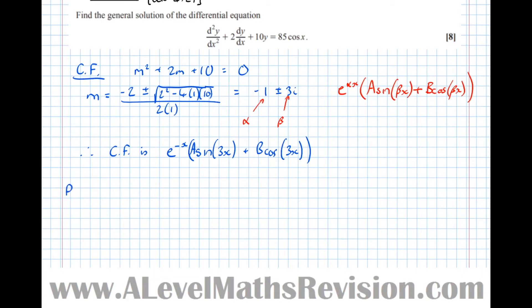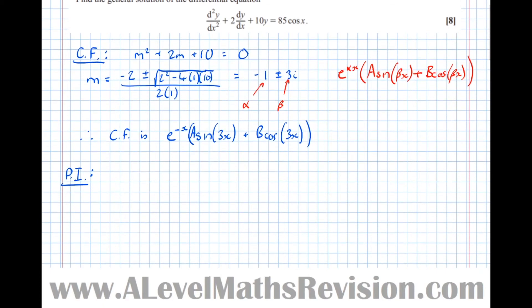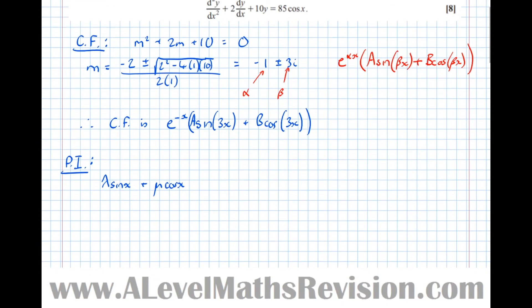So that was the complementary function. Now, PI for particular integral. Again, just let the examiner know exactly what you're working out and when. It makes it much easier to get the marks. And we know that because we've got cos x as being the f of x on the right-hand side, the particular integral has the form,